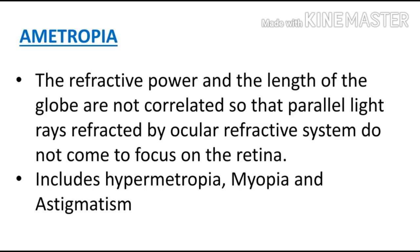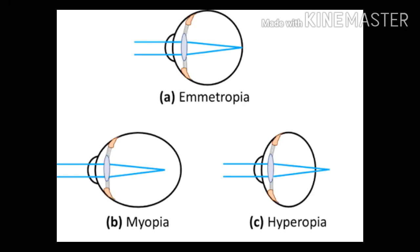Next is ametropia, where the refractive power and the length of the globe are not correlated, so that parallel light rays refracted by the ocular refractive system do not come to focus on the retina. In ametropia, rays either focus in front of or behind the retina. It is the opposite of emmetropia and includes hypermetropia, myopia, and astigmatism. As seen in the image, in figure A light focuses properly — that is emmetropia — while in figures B and C it does not — that is ametropia.